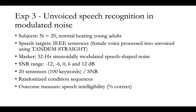In the third task, we asked participants to recognize unvoiced speech in modulated noise. These sentences are still IEEE sentences, but processed to sound like unvoiced or whispered speech using tandem straight vocal order. In the unvoiced version, speech intelligibility only depends on the spectrotemporal envelope of the speech. The signal-to-noise ratio was set from negative 12 to 12 dB, and speech intelligibility was measured in the same way.